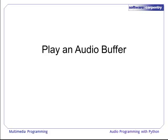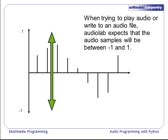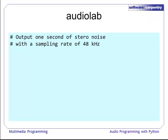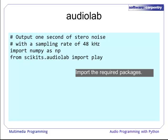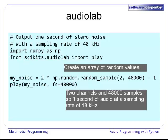Now we will cover how to play an audio buffer from AudioLab. When we want to play an audio buffer or write to an audio file, AudioLab expects that the audio samples will be between negative 1 and 1. Anything outside this range will be clipped — meaning the values will be truncated. So if you have a value of 1.5, it's only going to be played or written to file as a value of 1. Using NumPy, let's create an audio buffer containing 1 second of stereo noise at a sampling rate of 48 kHz. First we import NumPy and AudioLab's play method, then create an array of random values using the random.sample method in NumPy.